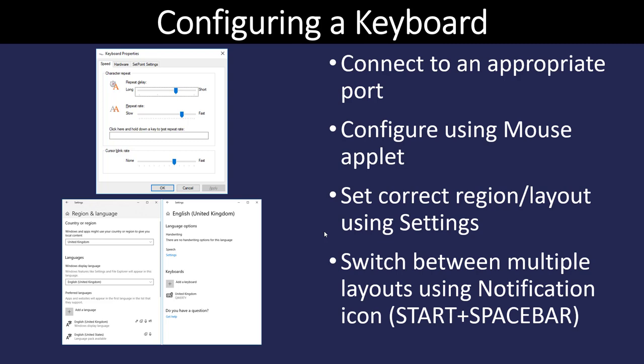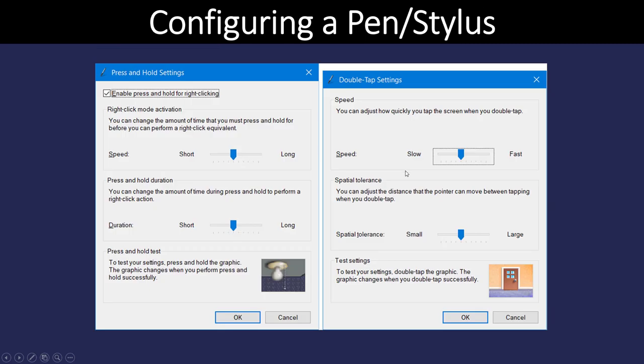Inside the Control Panel there are also options for configuring a keyboard. For a standard keyboard, the main options are repeat delay and repeat rate — how long you hold a key before it starts sending a string of characters. You can also choose the region or language, since a keyboard set up for US English has a different layout than one for the UK or other regions. You need to make sure your keyboard matches the correct region. On a USB keyboard this happens automatically, but with a PS2 keyboard you may need to manually configure it.